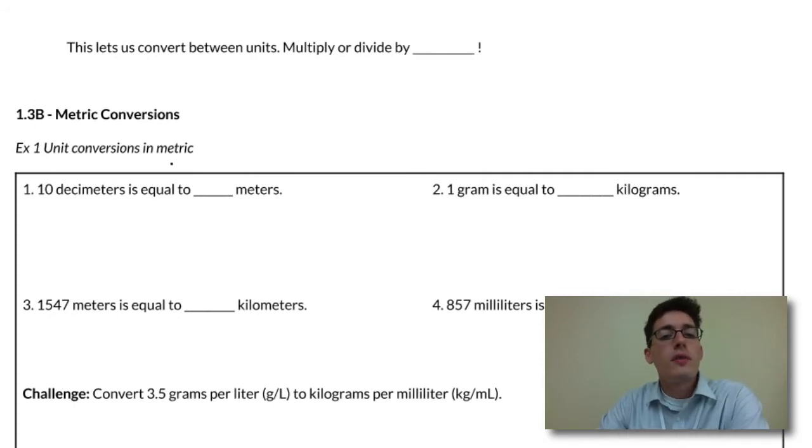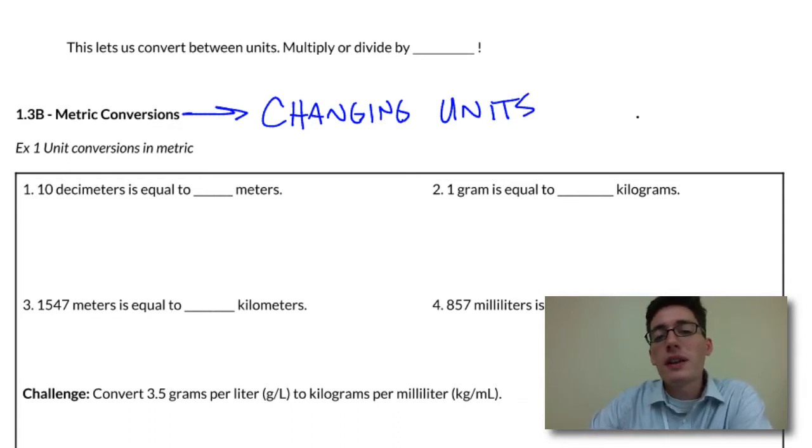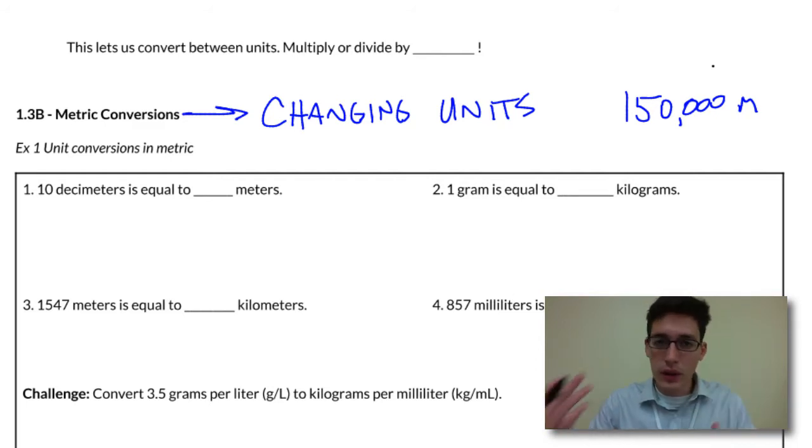When we're talking about conversions, what we're doing is we're actually changing units. So what do I mean by changing units? Well, if I said you went 150,000 meters, that's a really big number to try and comprehend. So what we would want to do is change that into something like kilometers. That's a little bit easier for our brains to comprehend.